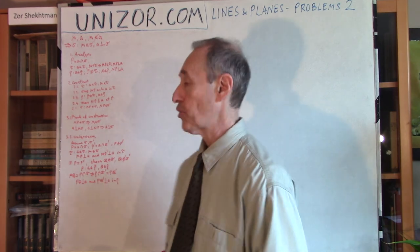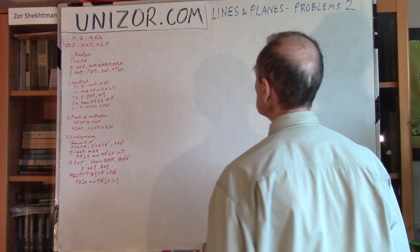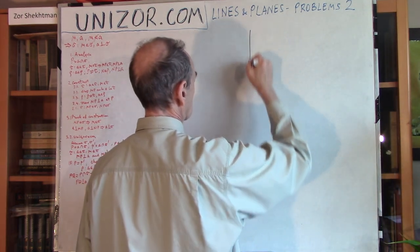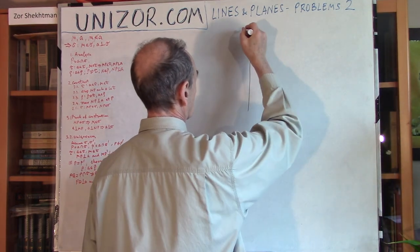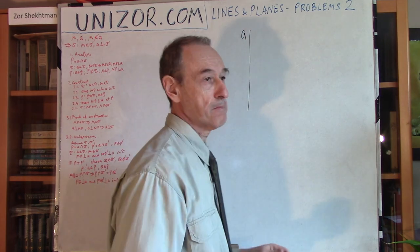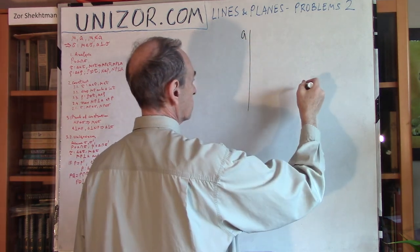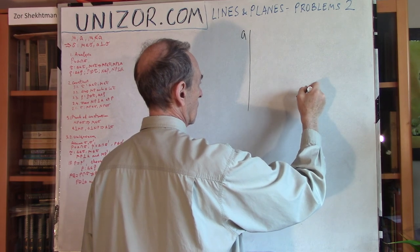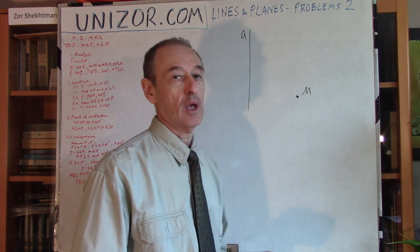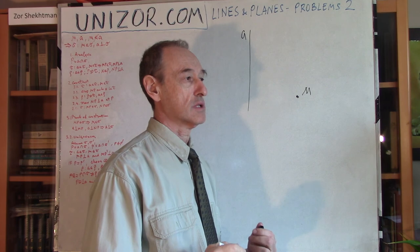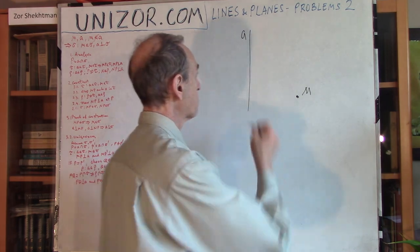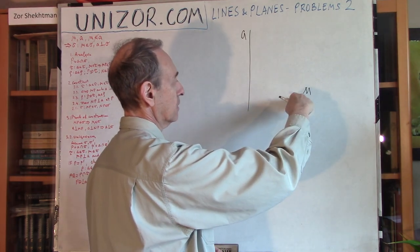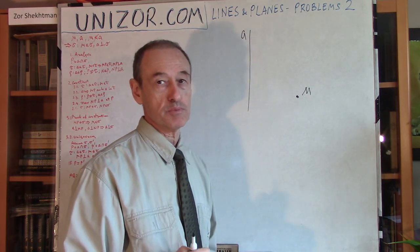The problem is: let's assume you have a line in space and you have a point M outside of this line. What you have to do is to construct a plane which is perpendicular to this line and contains this point M.